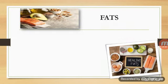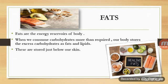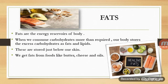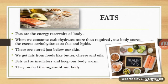The next component is fats. Fats are the energy reservoirs of our body. When we consume more carbohydrates than required, our body stores the excess as fats and lipids, stored just below our skin. We get fats from foods like butter, cheese, and oils. Fats act as insulators, keep our body warm, and protect the organs of our body.